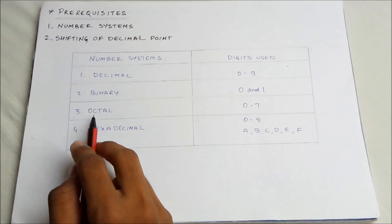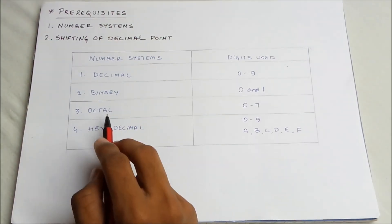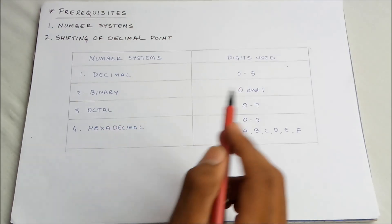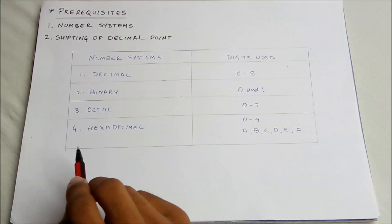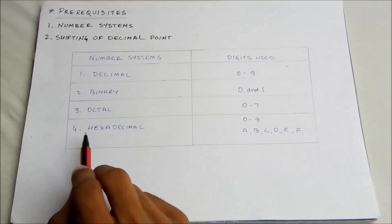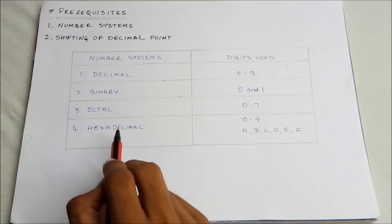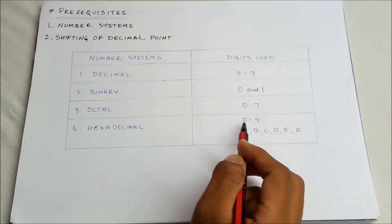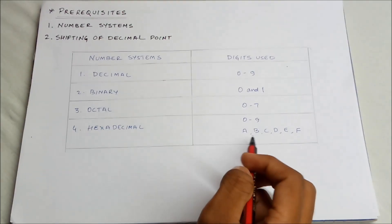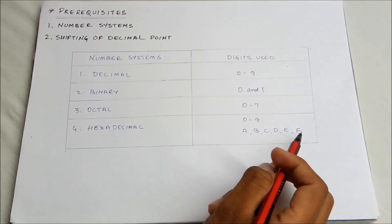The next number system is octal. In the octal number system, there are totally 8 digits available, from 0 to 7. And next is hexadecimal. In the hexadecimal number system, there are totally 16 digits available to represent a given number. This varies from 0 to 9 and also contains alphabets from A to F, that is A, B, C, D, E, and F.